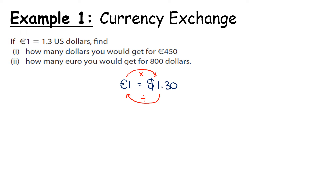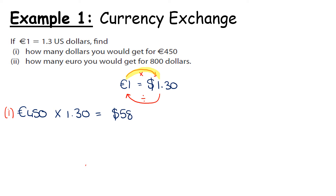So this gives us an instruction. For part one, we have 450 euro and we want to convert from euro to dollar, so we're going to multiply — not by one, because it won't change anything — but by 130. When we do that, we get our answer in dollars. So 450 multiplied by 130 gives us 585 US dollars.